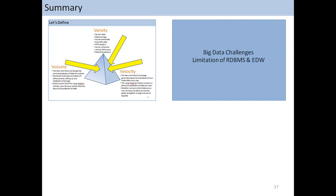We have also seen what challenges these characteristics are posing for us — why do we have to look for a different kind of solution? Why not continue with our RDBMS and traditional data warehouses? We have seen two kinds of challenges with big data. One is with respect to storage and accessing the data. The current disk drives are limited to a certain bandwidth — even the best hard drives can stream data at around 100 megabytes per second, meaning for reading a terabyte of data you end up spending around 200 hours.